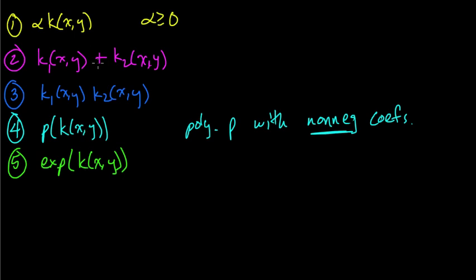So maybe I'll make a remark about how to prove these. For number four, you'd just use 1, 2, and 3, because you could construct any such polynomial with non-negative coefficients by some combination of these operations. And for five, you'd use four: write down the infinite series representation for e^x as the limit of a sequence of polynomials with non-negative coefficients.